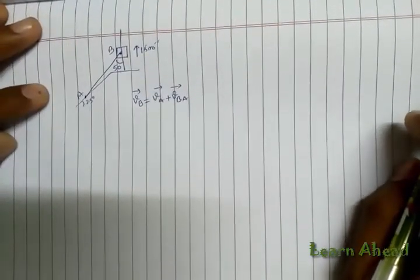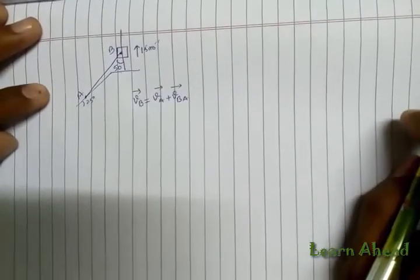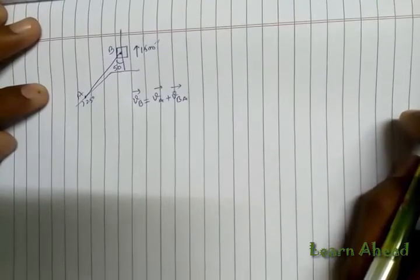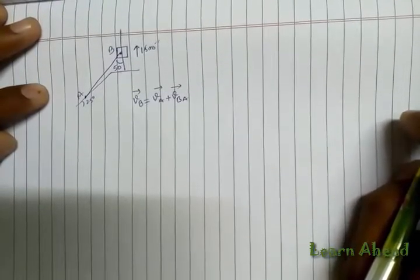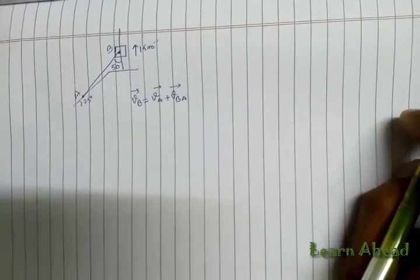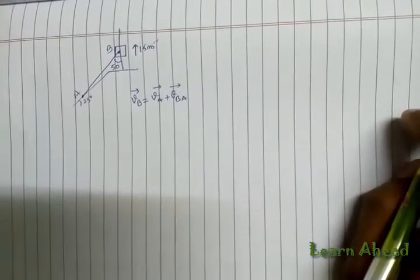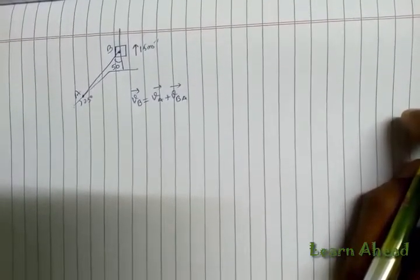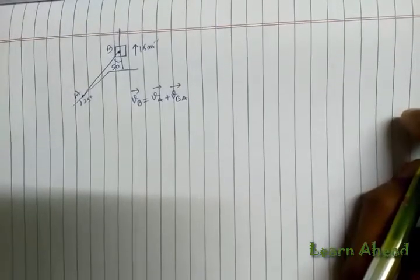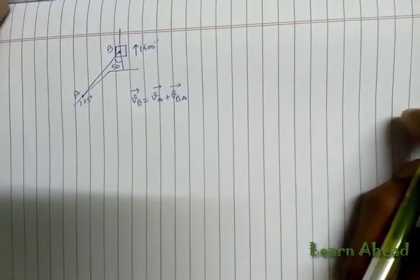Now, as far as VB is concerned, we know the magnitude as well as direction. As far as VA is known, we know the direction, and VBA we again know the direction. So whenever two quantities are unknown in such a manner, these types of problems with two unknowns can easily be solved with the help of a vector diagram.